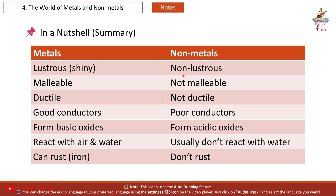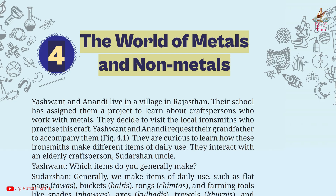Non-metals are non-lustrous, not malleable, not ductile, poor conductors, form acidic oxides, usually don't react with water, and don't rust. That completes the short notes and summary from Chapter 4: The World of Metals and Non-Metals.